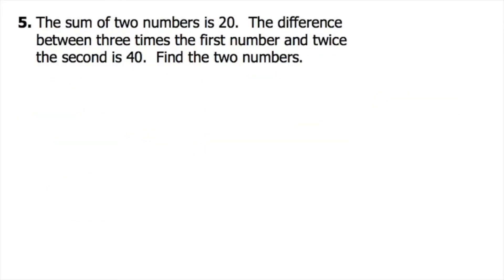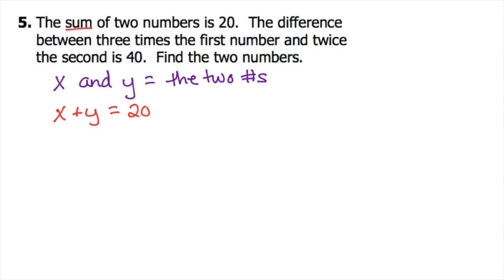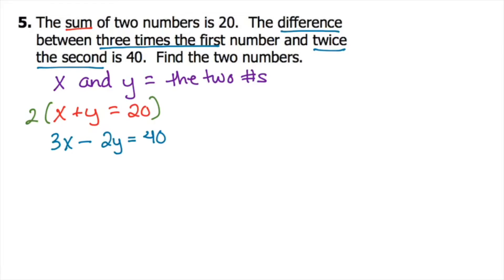Number five: the sum of two numbers is 20 and the difference between three times the first number and twice the second is 40 — find the two numbers. The sum is x plus y equals 20. For the second sentence: 'difference' means minus, 'three times the first number' is 3x, 'twice the second' is 2y, so 3x minus 2y equals 40. I see that if we multiply the first equation by 2 we can cancel out the y's and use elimination, so the first equation becomes 2x plus 2y equals 40.